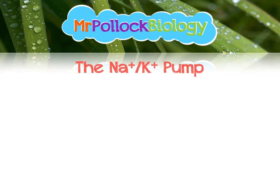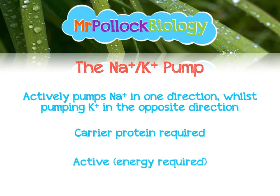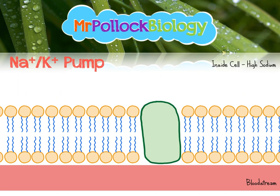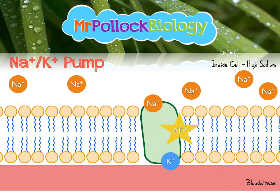Another transport mechanism is a specific example of active transport called the sodium-potassium pump. This actively pumps sodium in one direction whilst potassium is pumped in the other direction. It requires a carrier protein and it's an active process. Looking at the opposite side of the epithelial cell where it meets the bloodstream, inside the cell there is a high concentration of sodium, and potassium is brought in from the blood, and the locations of these ions are actively swapped. This requires ATP to change the tertiary structure of the transport protein, which swaps their locations. The importance of this will become clear in a moment.